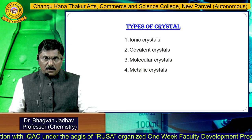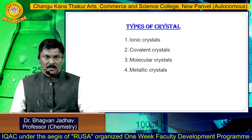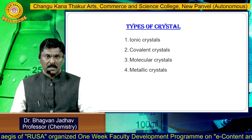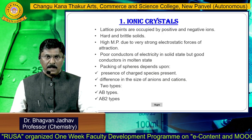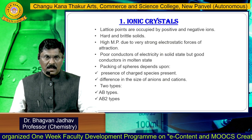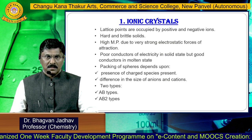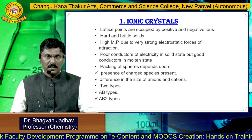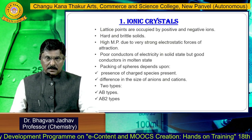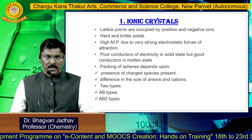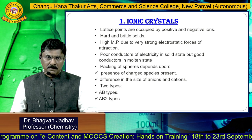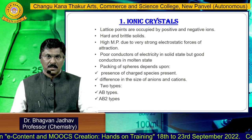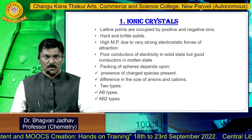The types of crystals: there are four types of crystals — ionic crystals, covalent crystals, molecular crystals, and metallic crystals. In ionic crystals, the lattice points are occupied by positive and negative ions. Ionic crystals are hard and brittle solids. They have high melting points due to very strong electrostatic force of attraction.